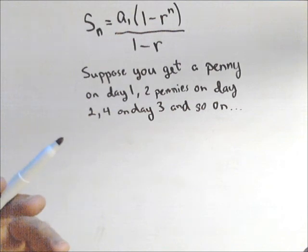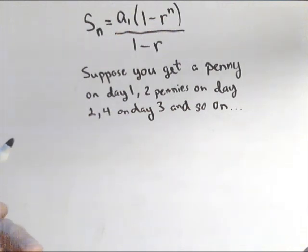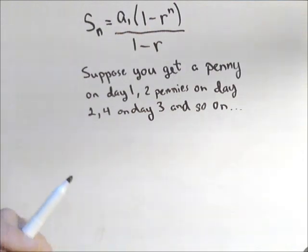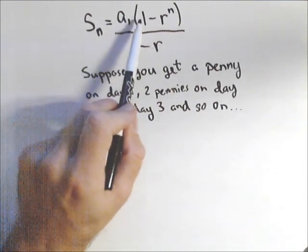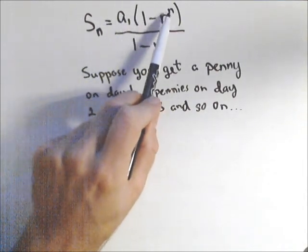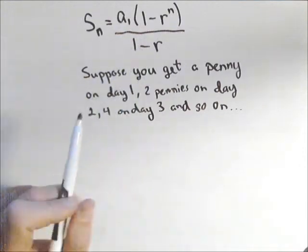What if we want to know how much total we're going to have after two weeks? Then we're summing up the first 14 numbers of a geometric sequence. The sum of a geometric sequence is the first term times one minus the common ratio to the number of terms, all over one minus the common ratio.